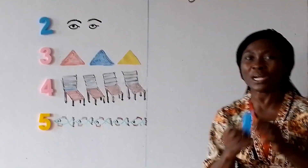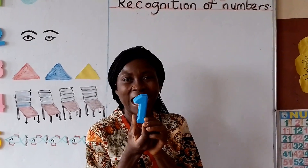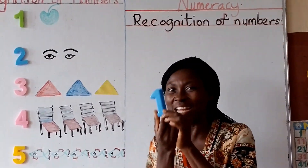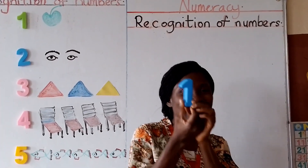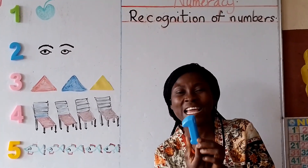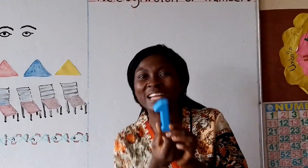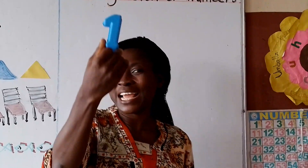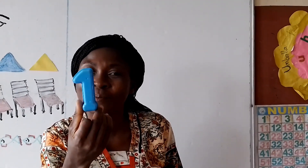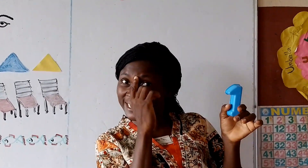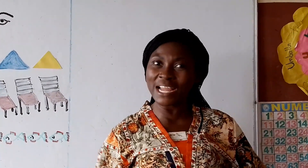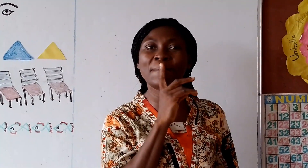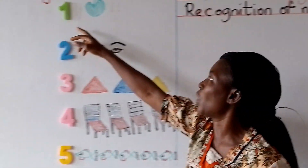Now we start with number 1. I'm singing 1, 1 is 1, 1 is a number, 1 is a law. I'm singing 1 — I have 1 earth, I have 1 body, I have 1 nose and 1 mouth. Number one.